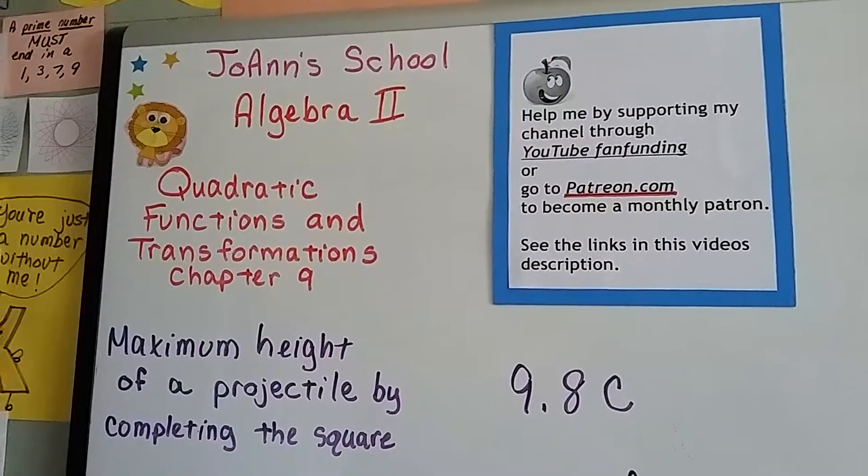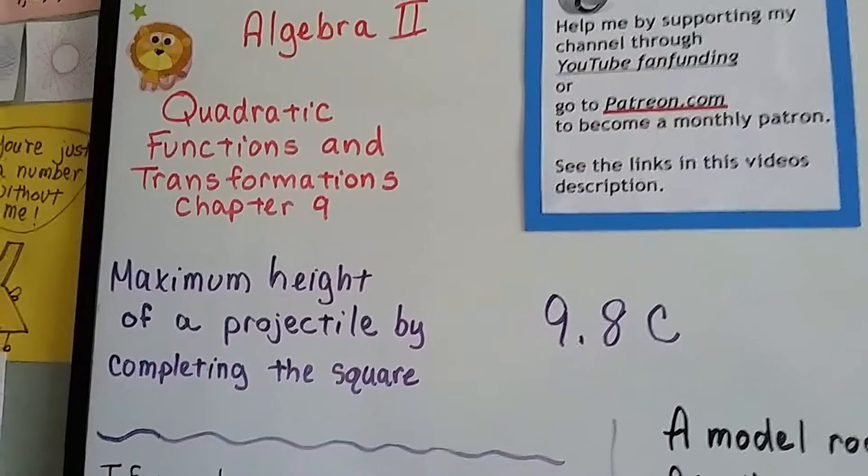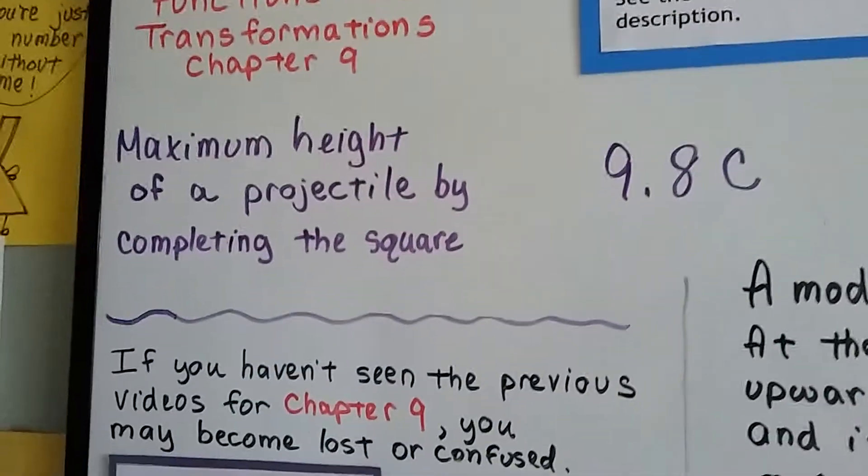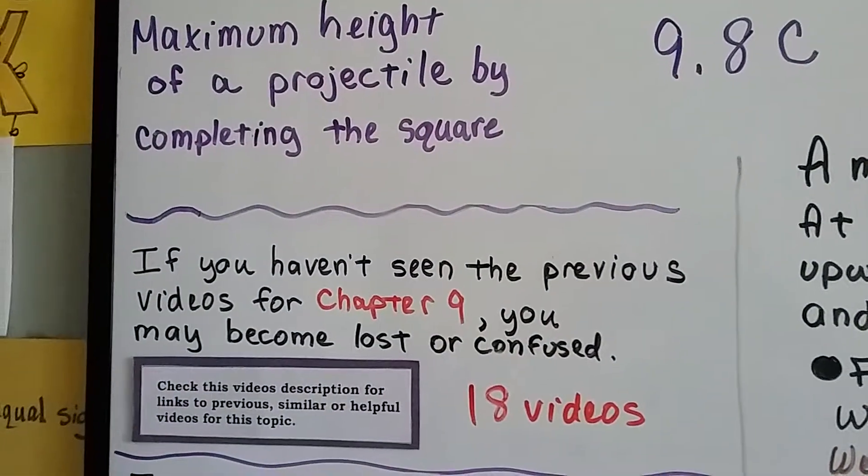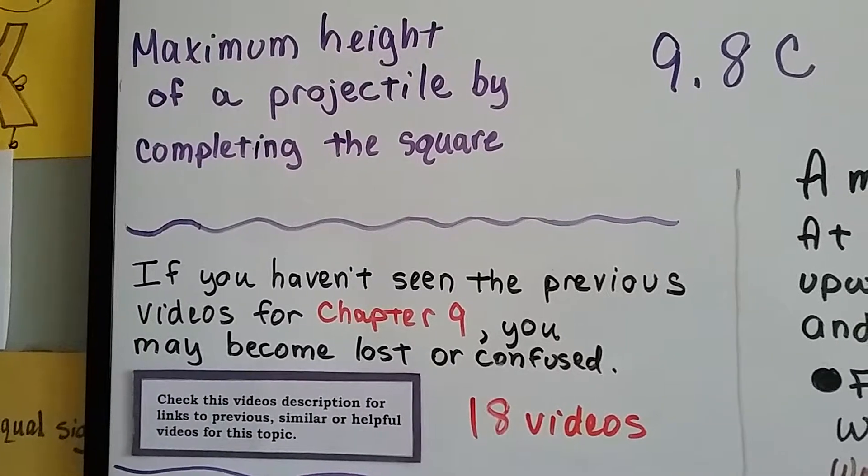We're in Algebra 2 at 9.8c, and we're going to talk about the maximum height of a projectile by completing the square. There's 18 previous videos for Chapter 9 so far. This is the last one before we go into Chapter 10.